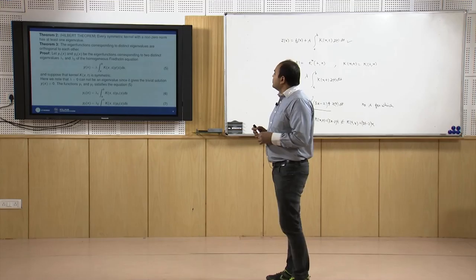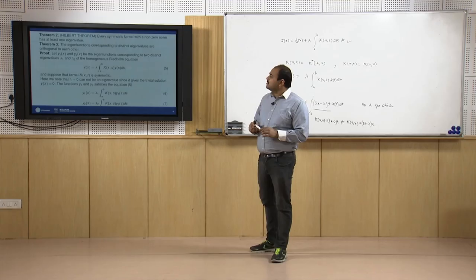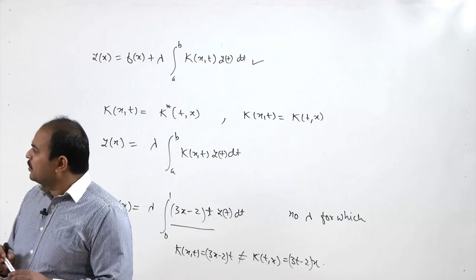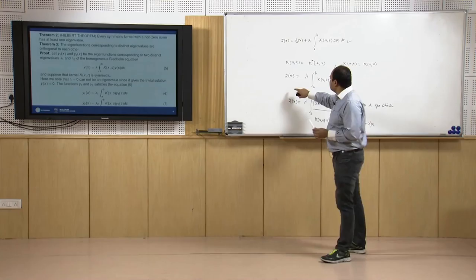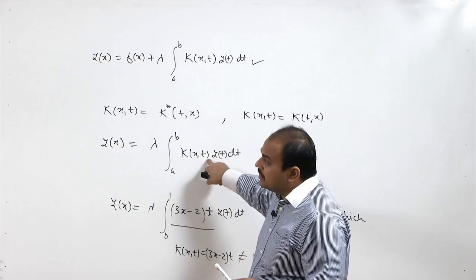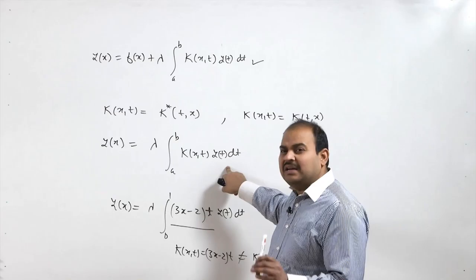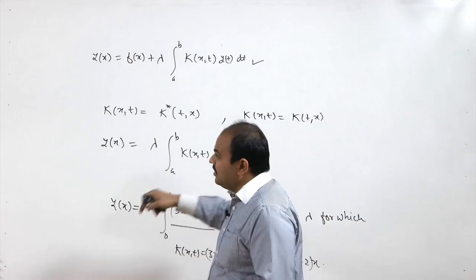The first very important beginning point for the study of eigenvalues and eigenfunctions is: every symmetric kernel with a non-zero norm has at least one eigenvalue. This is quite a lengthy proof so we take this theorem without proof. Whenever we have a homogeneous problem with a symmetric kernel of non-zero norm, it always has at least one eigenvalue and at least one non-trivial solution.